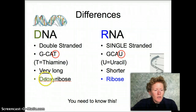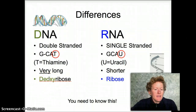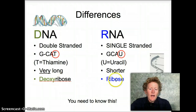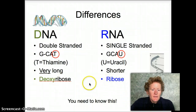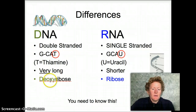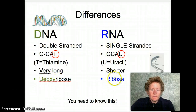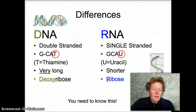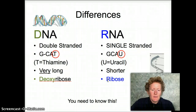The sugar in the sugar phosphate backbone in DNA is deoxyribose. The sugar in RNA is ribose, and that's what makes DNA DNA — it's deoxyribose nucleic acid — where RNA is ribonucleic acid. They're named for their different sugars in the sugar phosphate backbone.